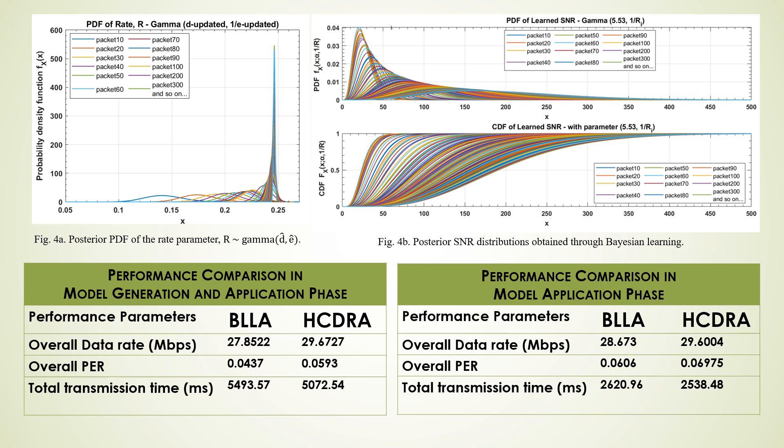This table summarizes the performance parameters. We conclude that the learning-based algorithm performs closer to HCDRA, which solely depends on frequent CQI feedback from the client to the AP. We also computed the throughput in the model application phase, and the performance is close to HCDRA. The packet reception ratio is comparable in both algorithms. HCDRA has a slightly lower transmission time compared to BLLA, resulting in slightly higher throughput.